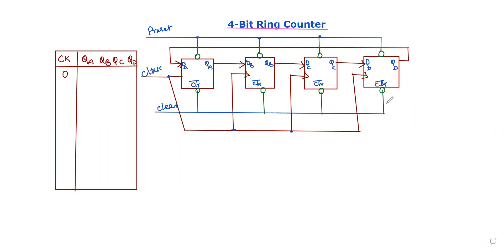Hello guys, in this video I will explain about a four-bit ring counter. A counter is a sequential circuit which is used to count a sequence of numbers. With four bits, each count ranges across the sequence of numbers. The maximum number of sequences is two to the power of four combinations, which is equal to 16.